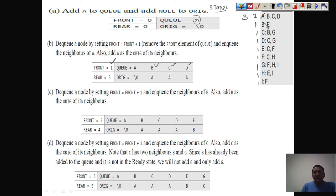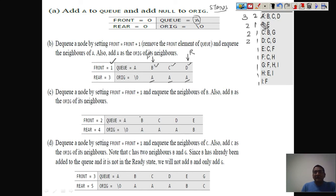B, C, and D have their origin recorded as A. Their status changes to two since they were enqueued. Next, we dequeue from the front, which is B. B's status becomes three. The front pointer increments. We look at the neighbors of B: the neighbor is E, which we enqueue. The rear increments to four, and the origin of E is recorded as B.